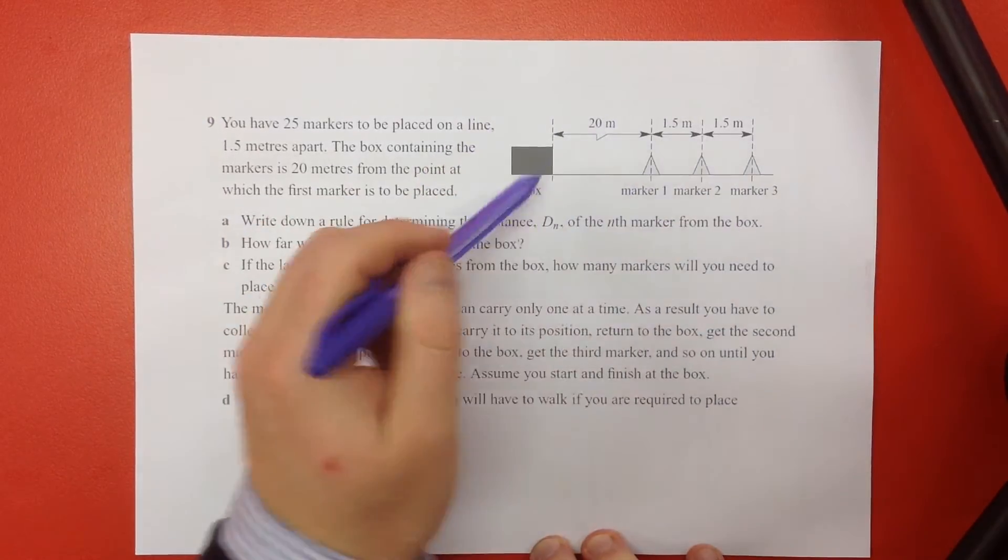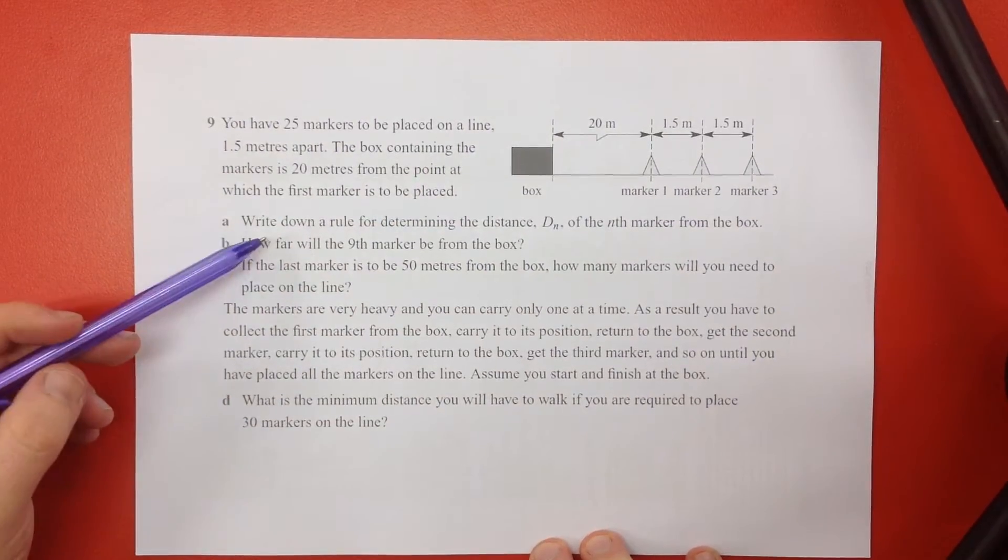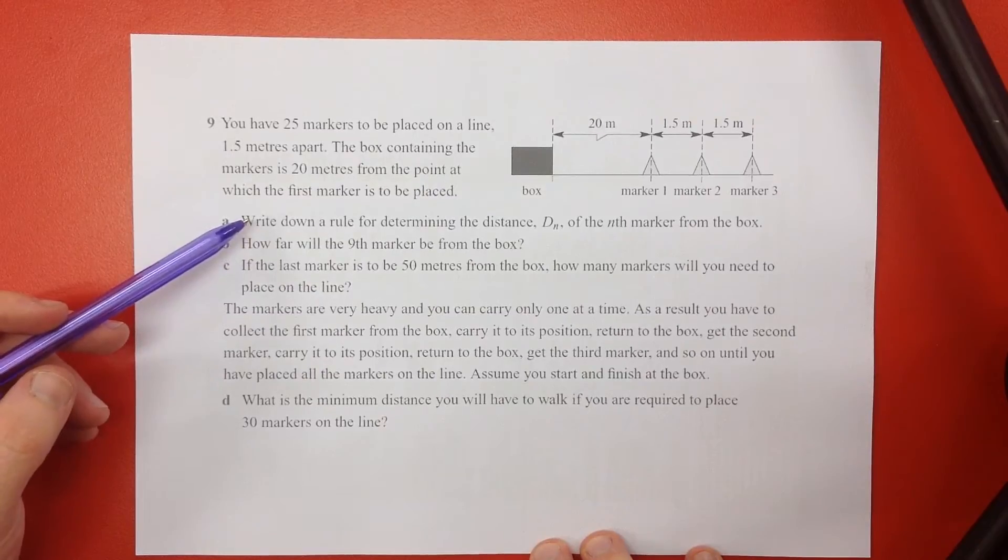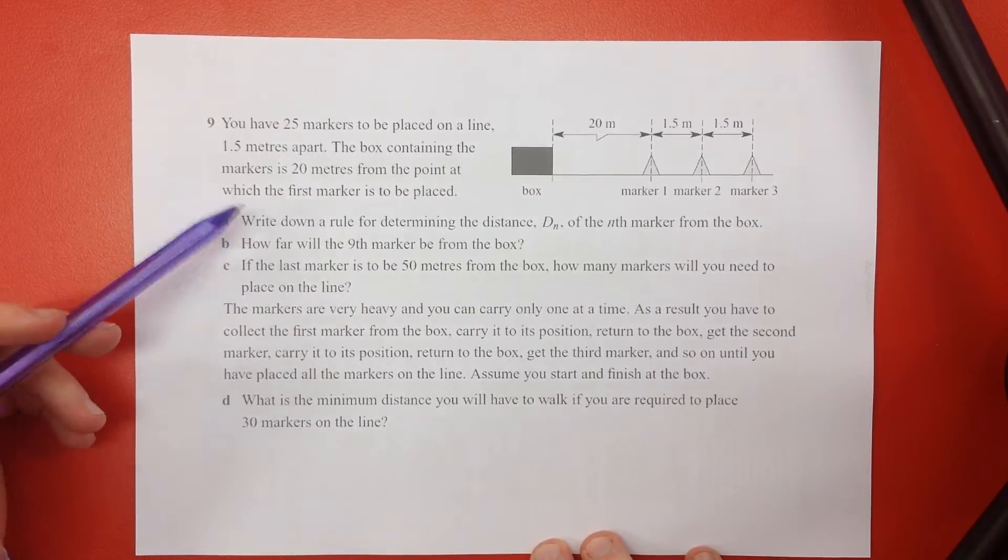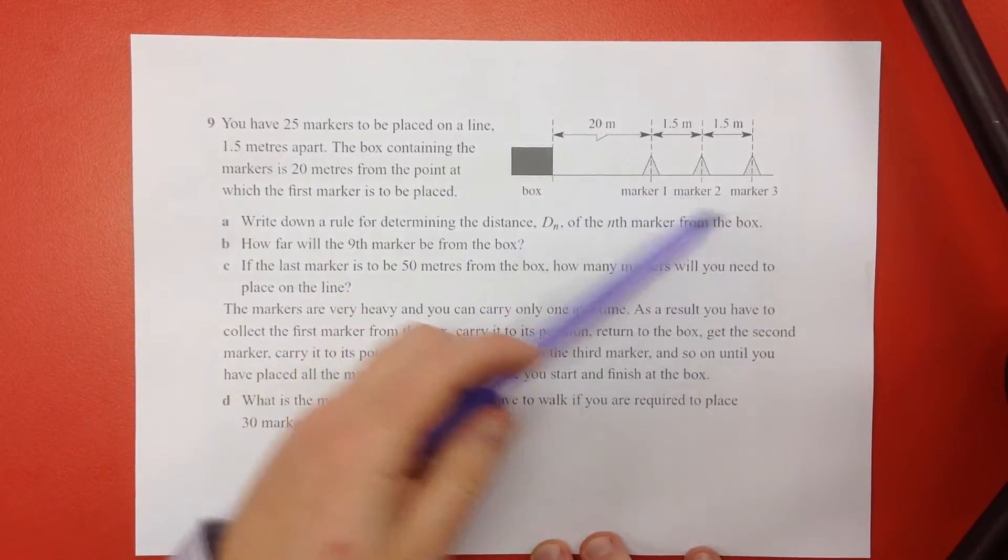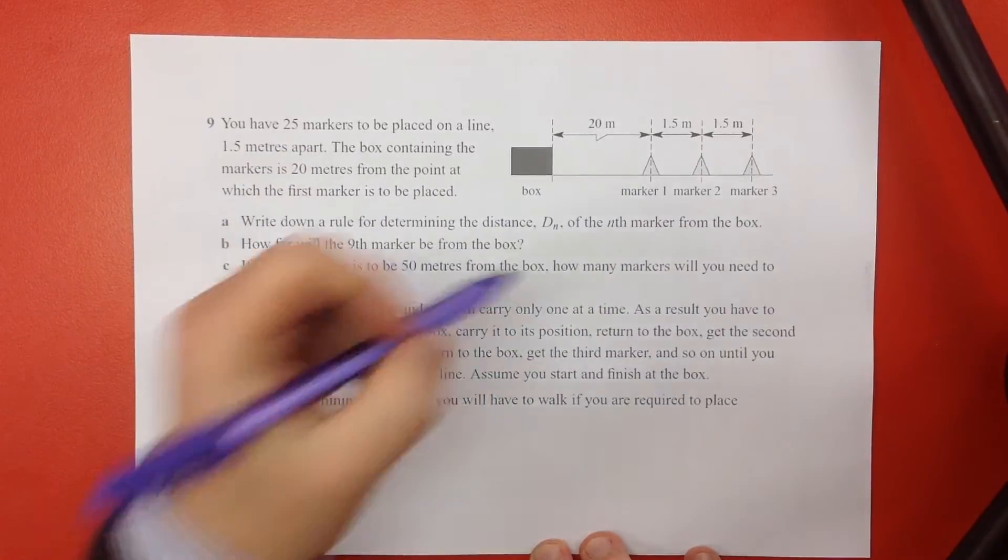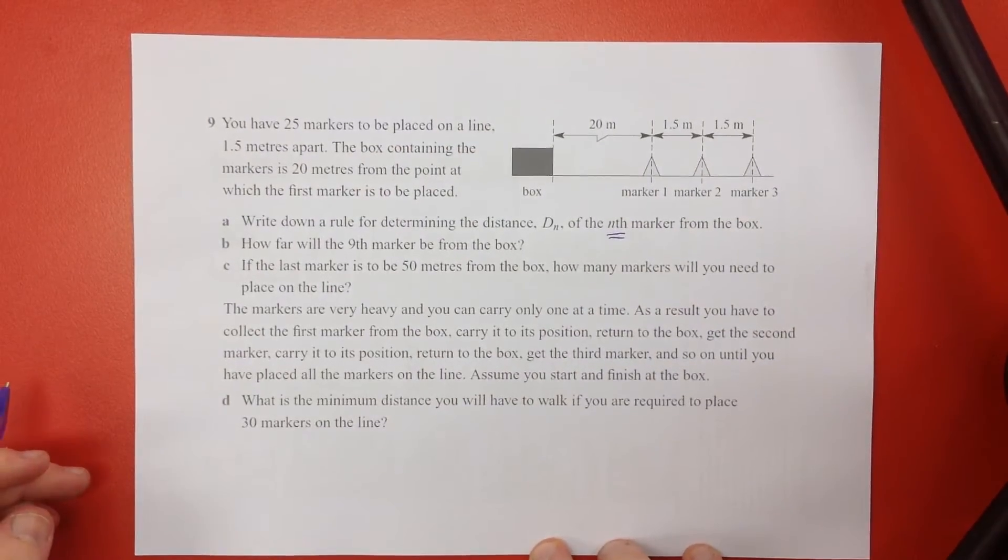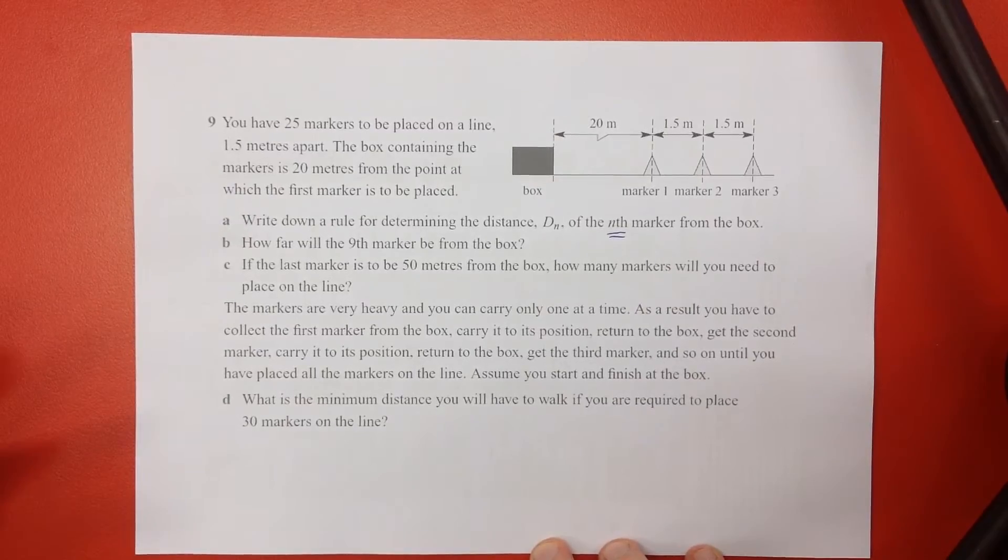So obviously we're walking each time, we're picking up a new one. Write down a rule for the distance, d of n, of the nth marker from the box. So the distance of whichever marker we're looking for from the box. This n thing, this nth thing, that just basically means we're looking for the general rule, and we don't want to know a specific marker. We don't want to know the third marker, we just want to know the nth marker.